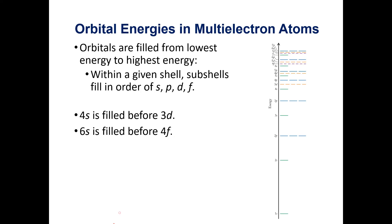To help remember which orbitals to fill in which order, there's a table you can write out. We start with 1s — there is no 1p so we skip it. In the next shells we have 2s, 2p, then 3s, 3p, and 3d.